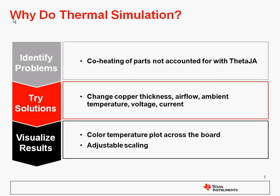The next thing that a simulator will bring is the ability to try different solutions to thermal problems. You can do things like change copper thickness, change your airflow, change ambient temperature, and modulate the voltage and current being supplied to the board to change the power dissipation. Lastly, a simulator will allow you to visualize the results across the board. In the Webbench Webtherm thermal simulator, we give you a color temperature plot across the board with adjustable scaling so you can see where the hot spots are and really zero in on the problems.